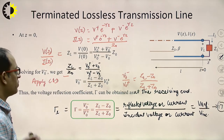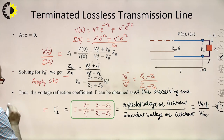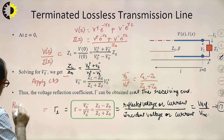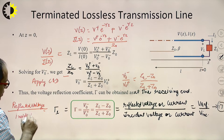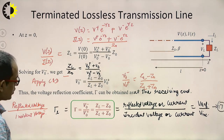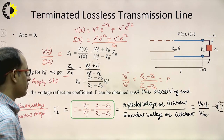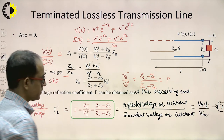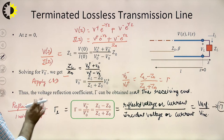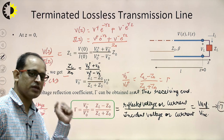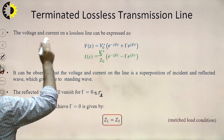V−/V+ is the ratio of reflected voltage to incident voltage. So the reflection coefficient Γ = V−/V+ = (ZL − Z0)/(ZL + Z0). This is the formula for the reflection coefficient, which is the reflected voltage or current divided by the incident voltage or current.